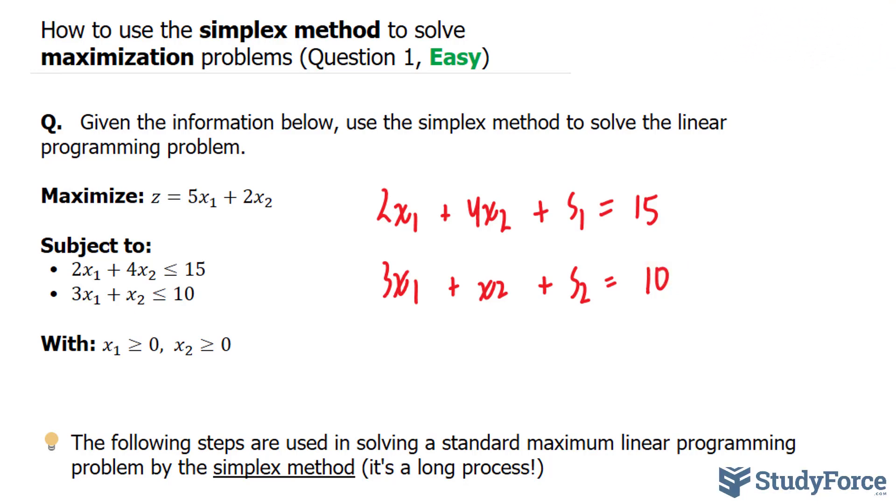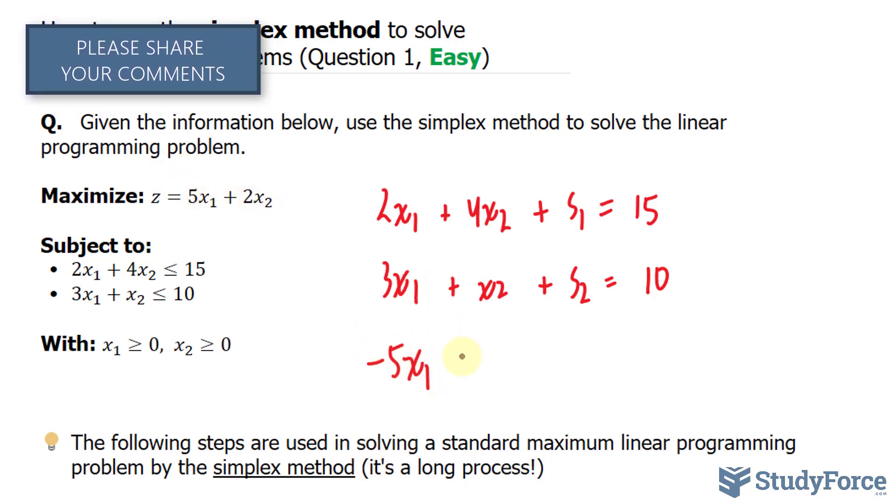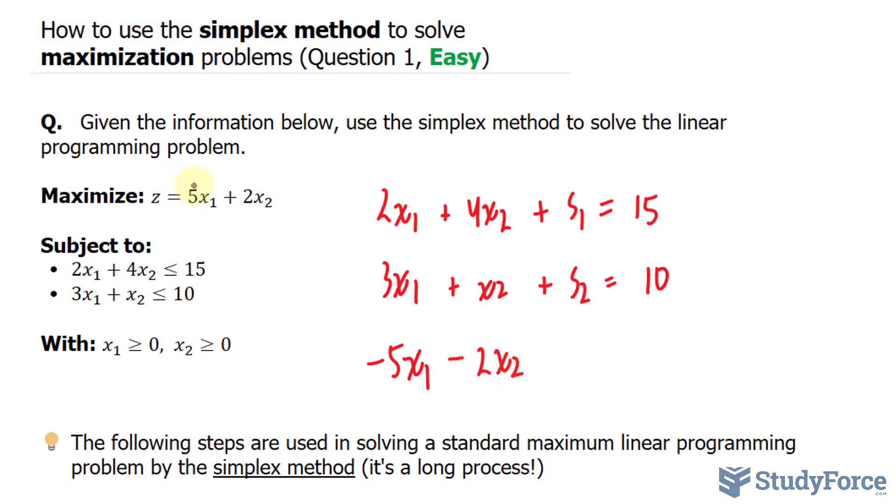In addition, once you've done that, you want to bring these terms in your objective function over to the other side. So, we'll have negative 5x sub 1 minus 2x sub 2, notice that I'm bringing these over, plus z is equal to 0.